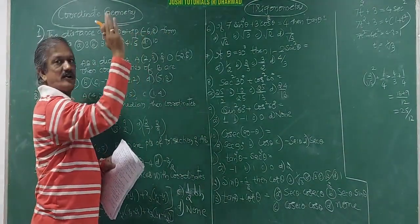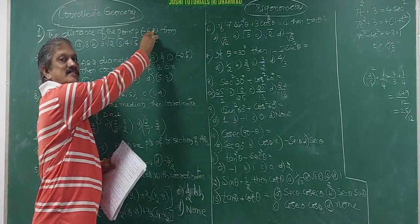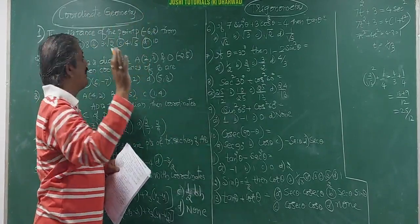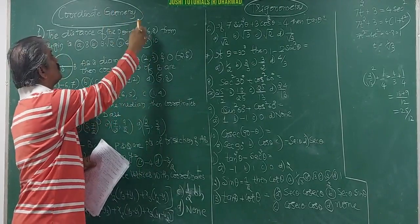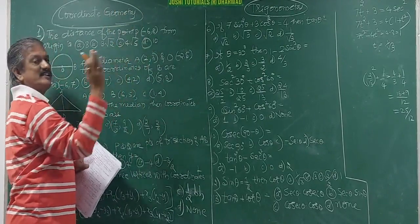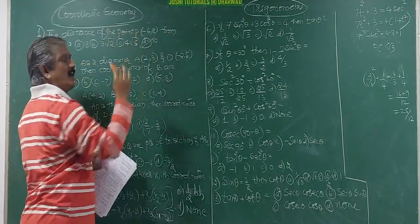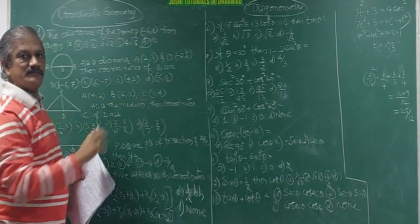Just square it: (−6)² is 36, 8² is 64. When you add you get 100, and root of 100 is 10. This is an option answer — no need to solve further.